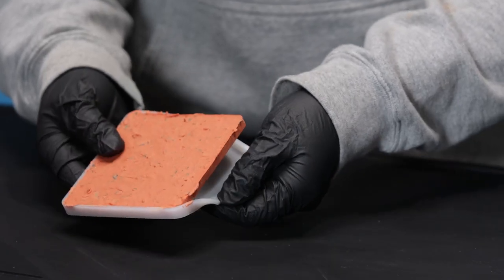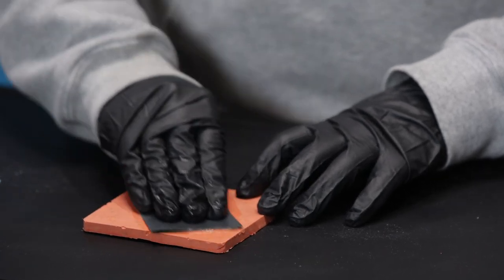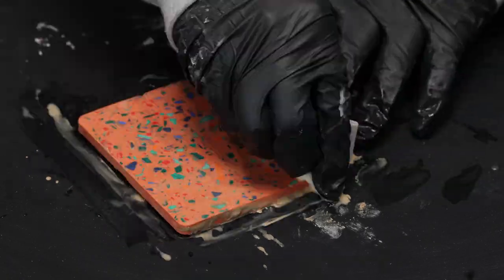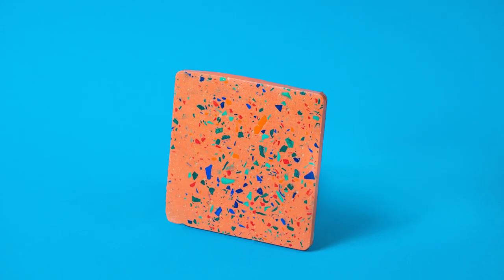To reveal chips when your project is ready to demold, use 220 to 400 grit sandpaper to wet sand the surface. Immediately after curing, the material will be the softest, making it easier to sand.